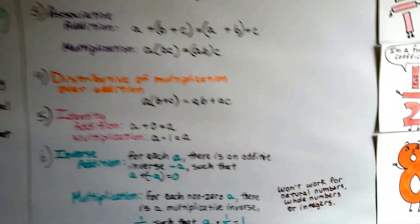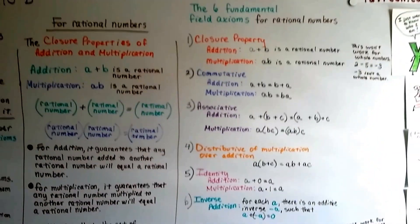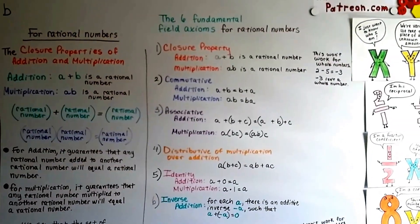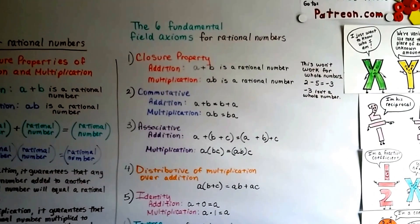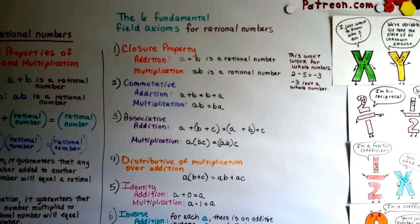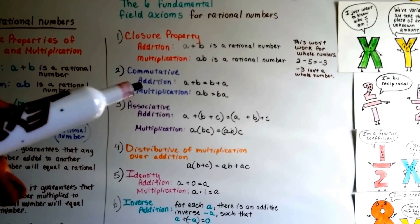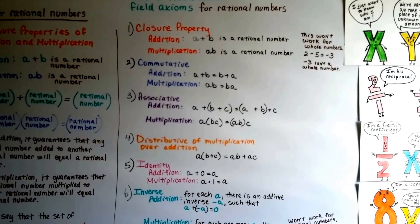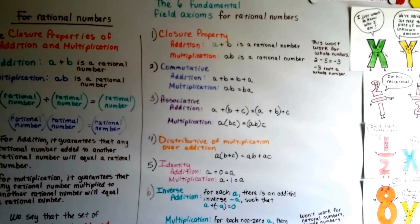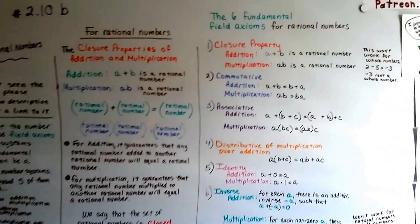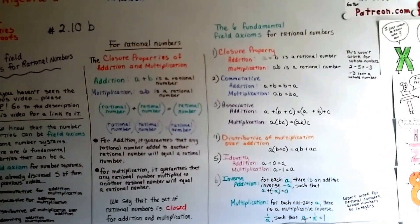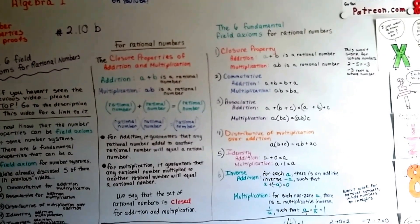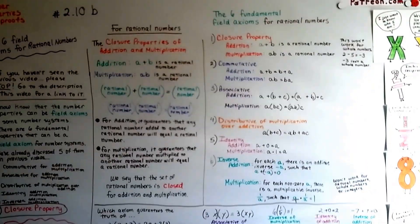Those are the six fundamental field axioms for rational numbers. Remember, when it's true, then it's a field for that number system — if the commutative property is true for rational numbers, then it's a field axiom for rational numbers. We're going to continue on to 2.10c to talk about properties of equality. I hope this was helpful. Bye!